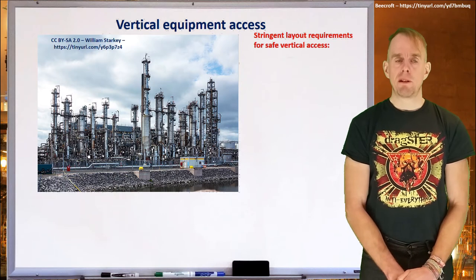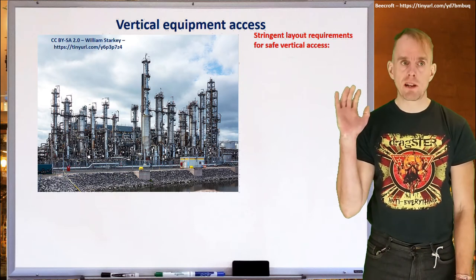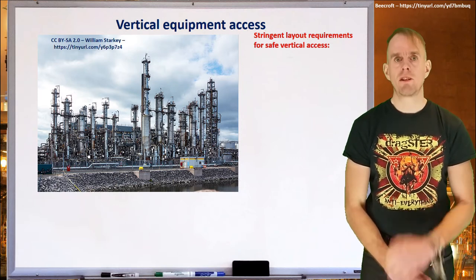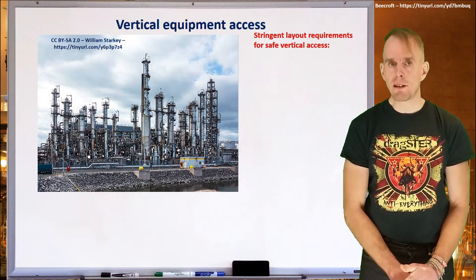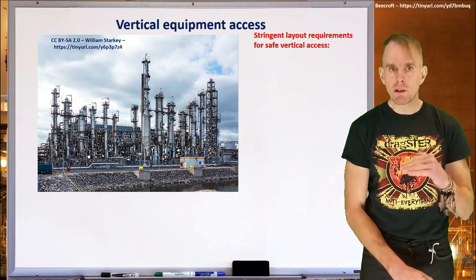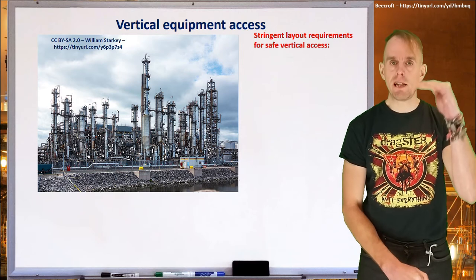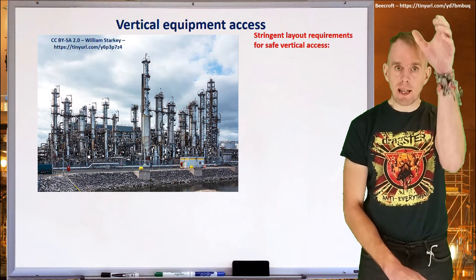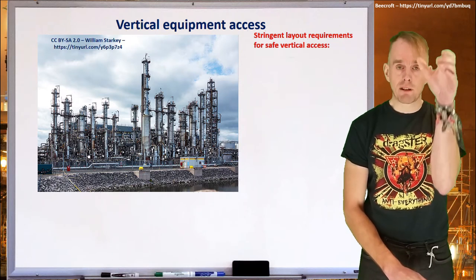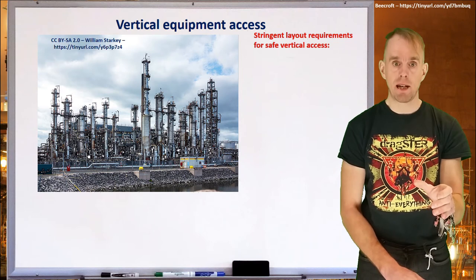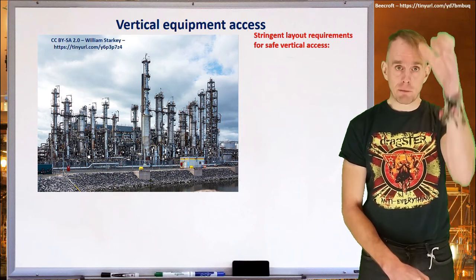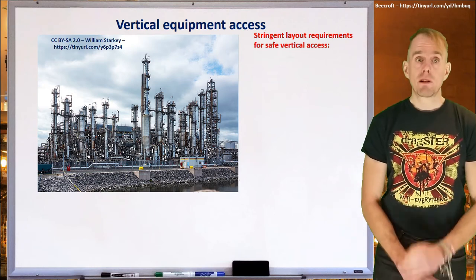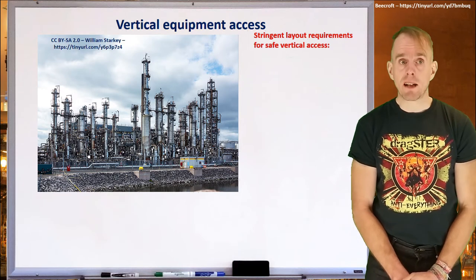Let's now think about vertical equipment. The picture on the whiteboard is of a distillation train — look at each distillation column in detail and you'll see ladders, platforms, and handrails. You'll also see that these platforms are spaced an even distance vertically one above the other. Ladders very rarely run in one straight run directly beneath a platform — imagine what would happen if somebody fell and there wasn't a means of arresting that fall. Stringent layout requirements exist for safe vertical access.